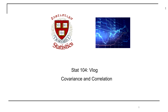What we're looking at in class 3 is the relationship between two variables. We have measures called covariance and correlation. We know how to summarize one variable — the mean, median, IQR, standard deviation. We now want to look at two variables and see if they're related to each other, and for that we have covariance and correlation.